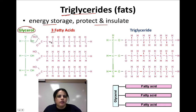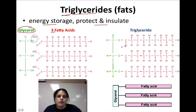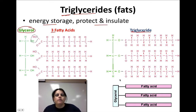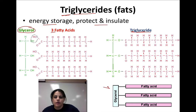A fatty acid is simply a long chain of hydrogens and carbons, and it also has a carboxyl end. The fatty acid is connected to the glycerol at three points through dehydration to form the triglyceride. So: tri = three fatty acids, glyceride refers to the glycerol. This is the main type of fat inside the body — whether it's good fat or bad fat, it's the triglycerides we're actually looking at.